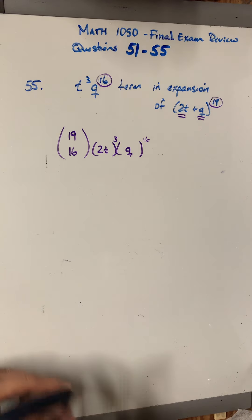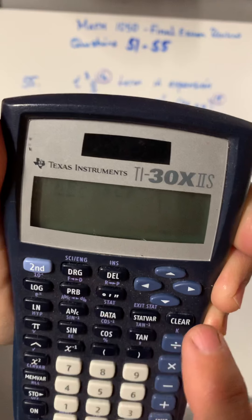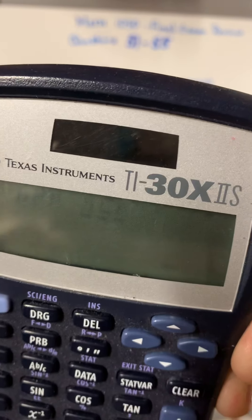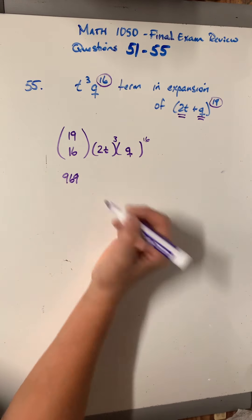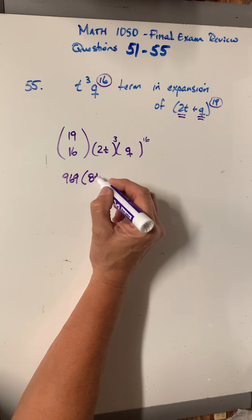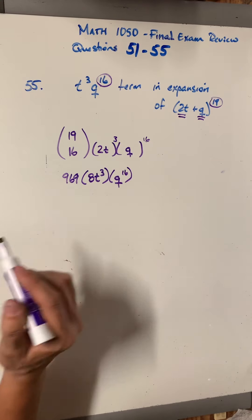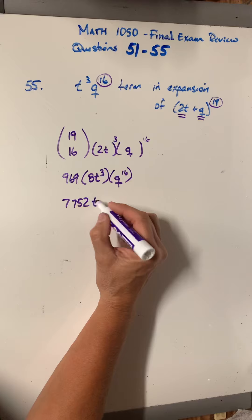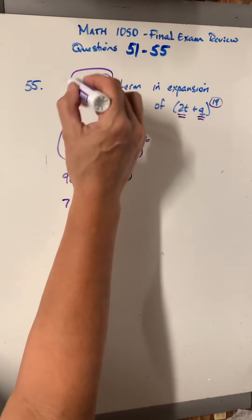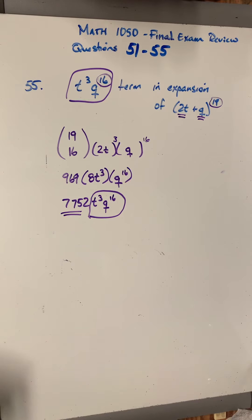So what is 19 choose 16? So, hopefully, you've figured out how to do this on your calculator. So I'm going to do 19, probability, switch to choose, equals, 16, equals, and I get 969. So this is 969. 2t to the third would be 8t to the third, if I distribute that power of 3, and then q to the 16th. 969 times 8 is 7752, and then t to the third, q to the 16th. So if this was the term in question, I've now pulled that piece out. The coefficient is 7752.